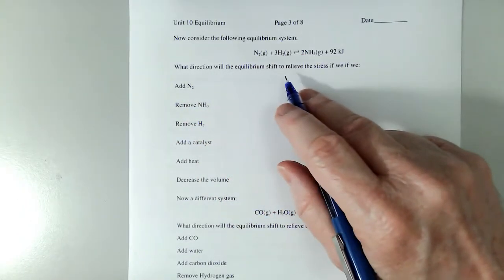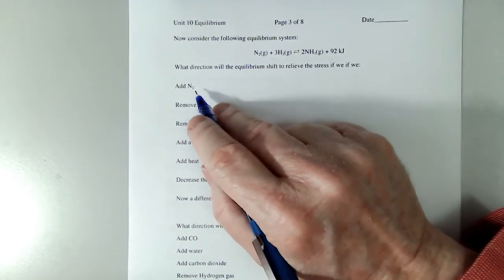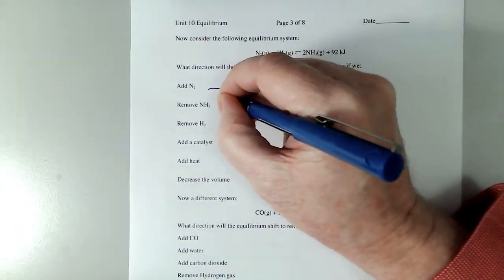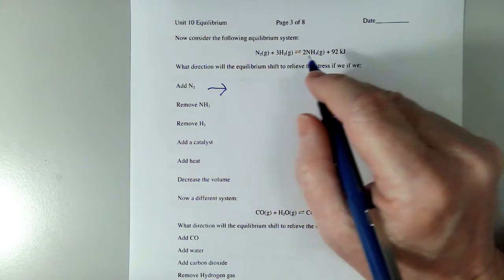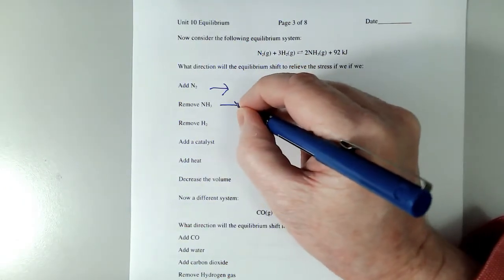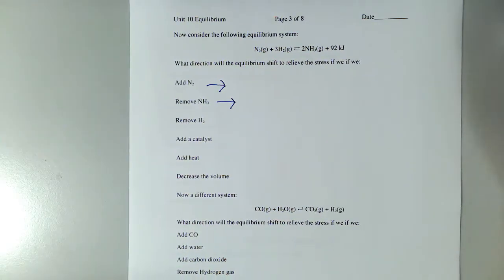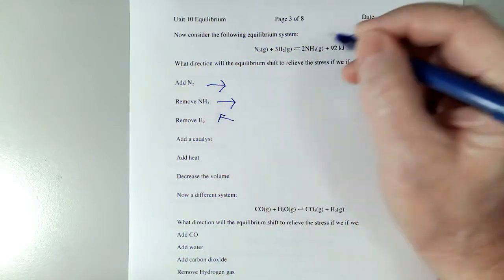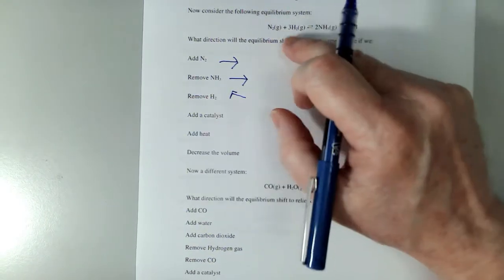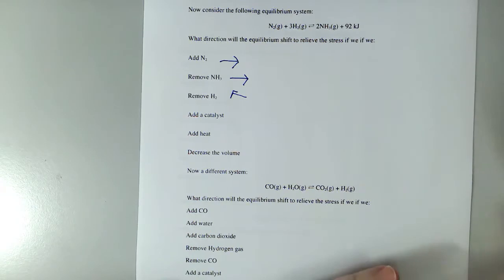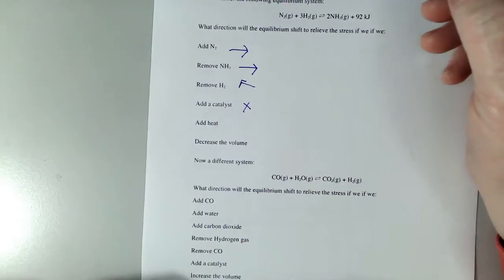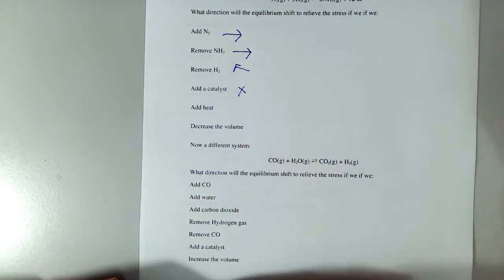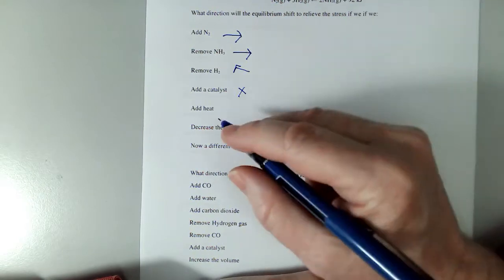What direction will the equilibrium shift to relieve the stress if we add N2? Well, if we add N2, we're putting in more reactant. That'll make more product. If we remove NH3, we're removing a product. It's going to replace what's removed to keep the equilibrium equal. We remove H2. Shifts back towards the reactants. If we're removing a reactant, we want to replace what we've removed. Adding the catalyst has no effect on equilibrium. It lowers the activation energy, but it lowers the forward reaction, and it lowers the reverse reaction.